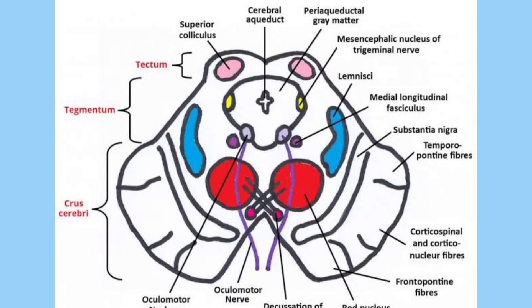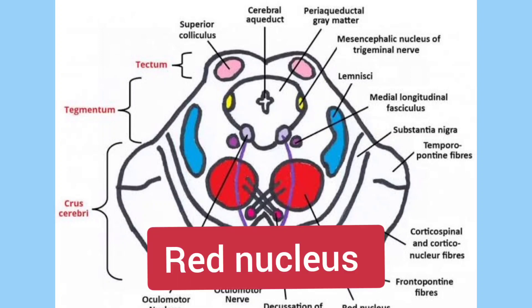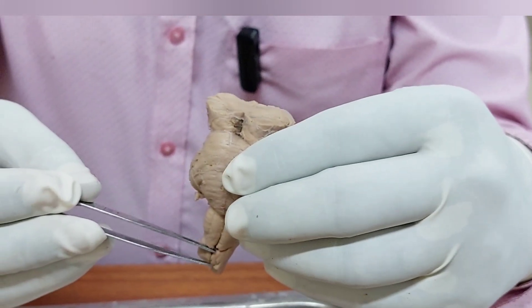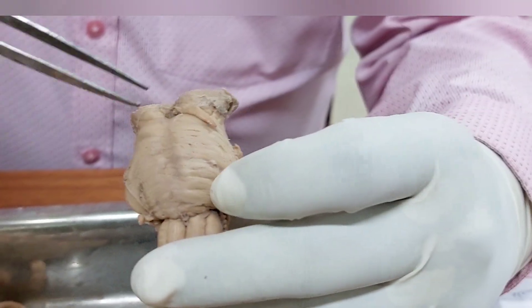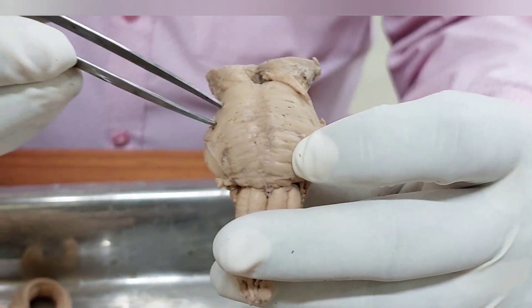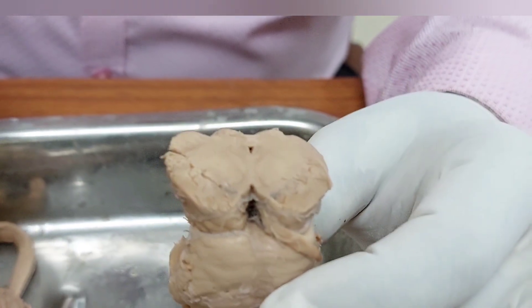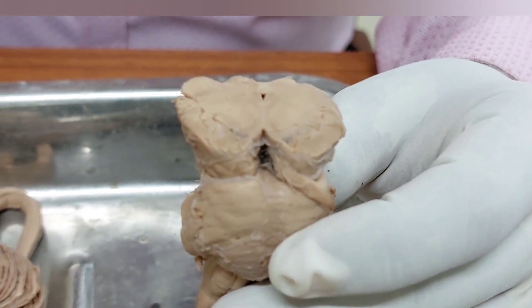The red nucleus is red or rather pink due to the presence of iron content and also its vascularity. It is pink only when cut freshly, so in a fresh specimen of a cut section of the midbrain you can see the red nucleus is pinkish in color. The red nucleus is a very important and conspicuous feature of the midbrain, particularly in the upper part. The inferior olivary nucleus is a special feature of the medulla, the pontine nucleus of the pons, and the red nucleus of the midbrain — they are special features other than the different cranial nerve nuclei.